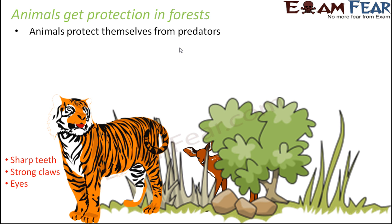The tiger has sharp teeth, which help it tear the flesh of other animals. It has strong claws that help to catch animals and give a better grip. The eyes of the tiger are located in front of the face, which helps it locate prey correctly — having front-facing eyes gives a clear front view to locate the prey.